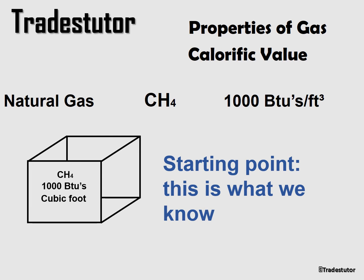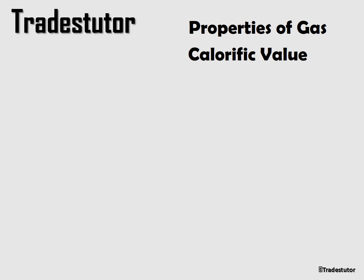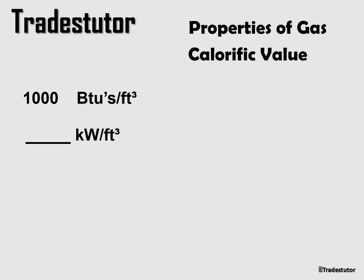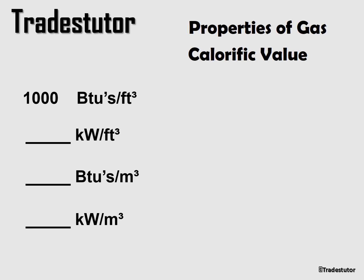From this starting point, we need to translate it in three different ways — both imperial and metric. We want to get to: kilowatts per cubic foot, BTUs per cubic meter, and kilowatts per cubic meter. So we want to take the original value and translate it into all three of those.